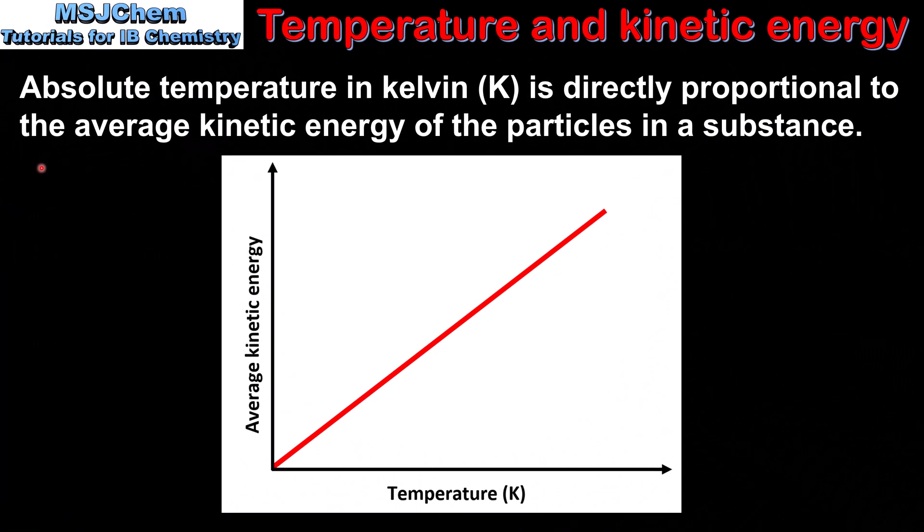Another important point about the Kelvin scale is that the absolute temperature in Kelvin is directly proportional to the average kinetic energy of the particles in a substance. This graph shows the relationship between average kinetic energy and temperature in Kelvin. As we can see from the line, it shows a directly proportional relationship. So if we double the temperature in Kelvin, we double the average kinetic energy of the particles in a substance.